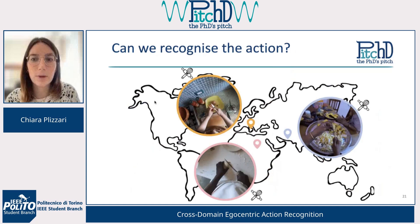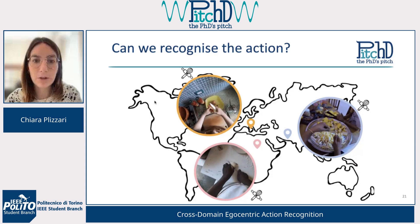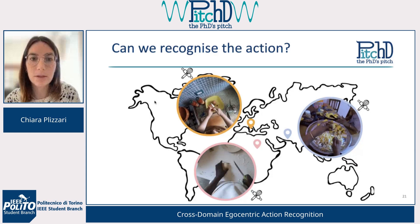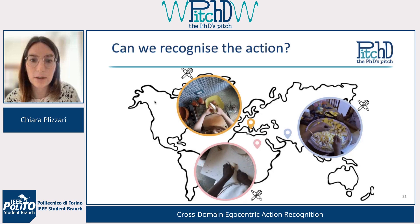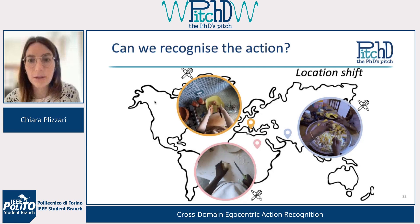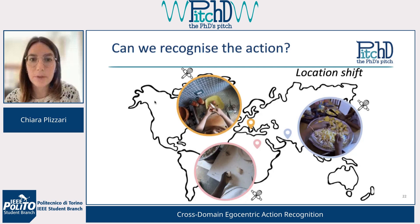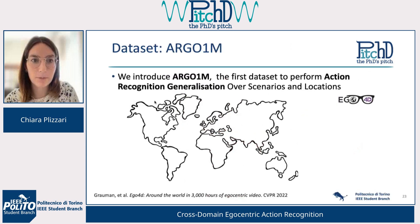There is also another domain shift called geographical location shift. You can see the same action performed in different geographical locations — someone cutting in Italy, someone cutting in Africa, and someone cutting in India. Because of this geographical diversity, there is a domain shift called location shift that impacts the way the actions are performed.